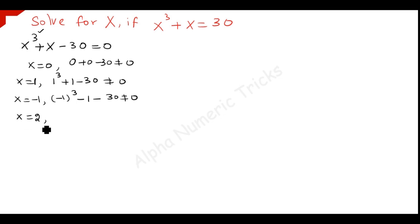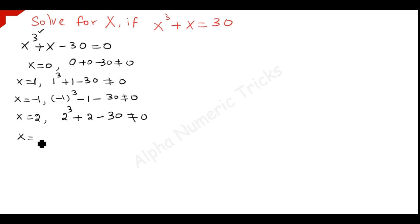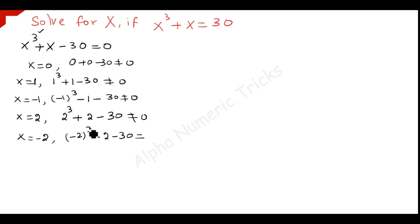Put x equal to 2 here. So 2 cubed plus 2 minus 30: 2 cubed is 8, 8 plus 2 is 10, 10 minus 30 is not equal to 0. Next, give x equal to minus 2. So minus 2 the whole cube minus 2 minus 30: minus 2 cubed is minus 8, and everything gives minus 10, which is also not equal to 0.